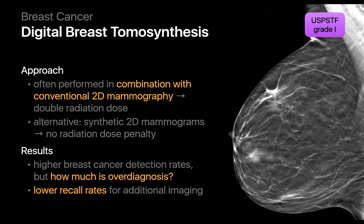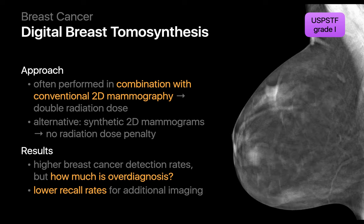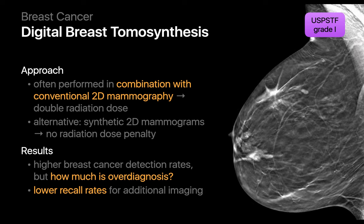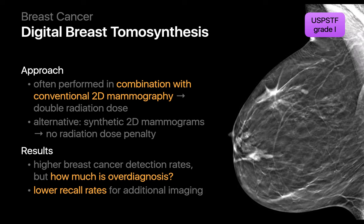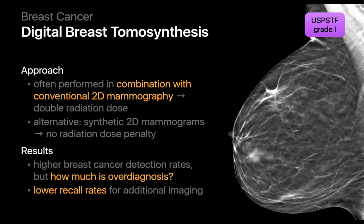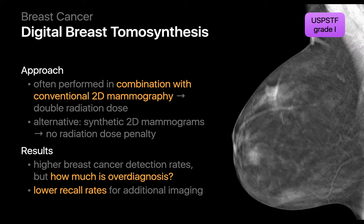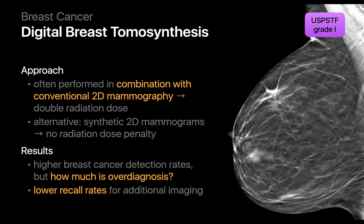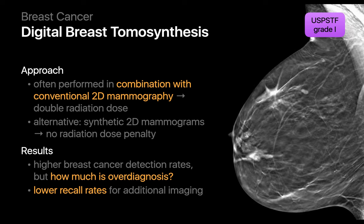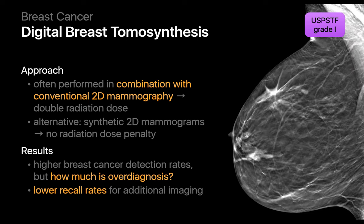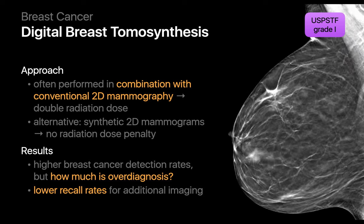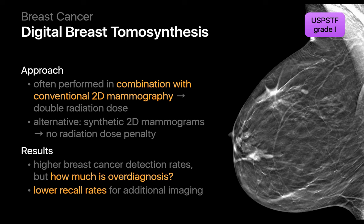Digital breast tomosynthesis is an imaging technique often performed in combination with conventional 2D mammography at the present time and basically doubles the radiation exposure to a patient. Newer processes exist that can generate synthetic reconstructions of 2D mammography images from the tomosynthesis views and can therefore reduce a patient's radiation dose. However, data on the performance of digital breast tomosynthesis with synthetic 2D mammography images is limited. This limited data does, however, suggest that digital breast tomosynthesis increases breast cancer detection rates and reduces recall rates for additional imaging or testing when compared with conventional 2D mammography alone. However, it's not known what number of these additional cases of breast cancer detected would have become clinically significant and what number are overdiagnosis.